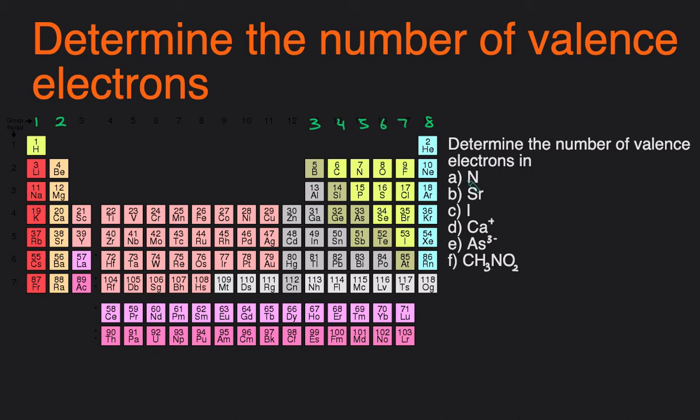So for the first example, we're looking at how many valence electrons nitrogen has. You see nitrogen is in the column that corresponds to five valence electrons, so it has five.